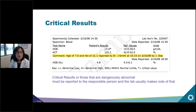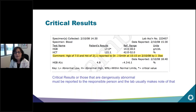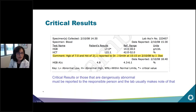The report will also list if any of the results are critical. Critical results are those that are dangerously abnormal, and these must be reported to the responsible person. The lab will usually make a note of that — for example, a hemoglobin of seven was reported to Dr. Smith at a particular time, to make sure your provider is aware of these very important results.